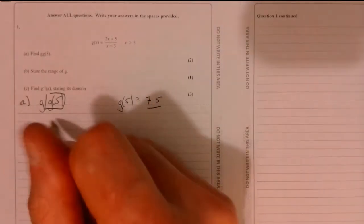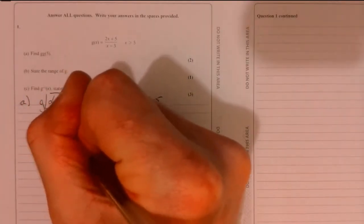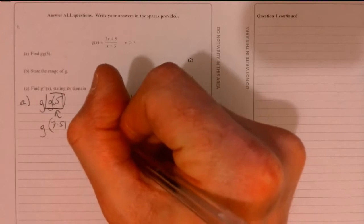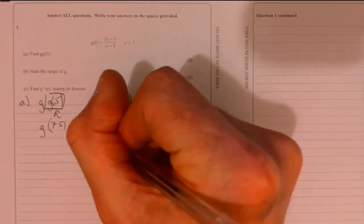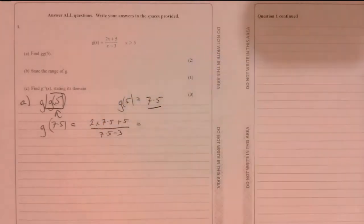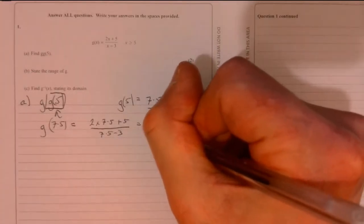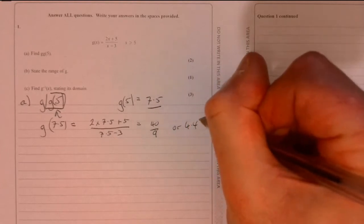So the answer to this is 7.5. So in other words, we just do this and we just pop 7.5 into there. So that's going to equal two times 7.5 plus five over 7.5 minus three. Get your calculator out, do it on there if you want to. And that's going to be 40 over nine, or if you prefer 4.4 recurring.